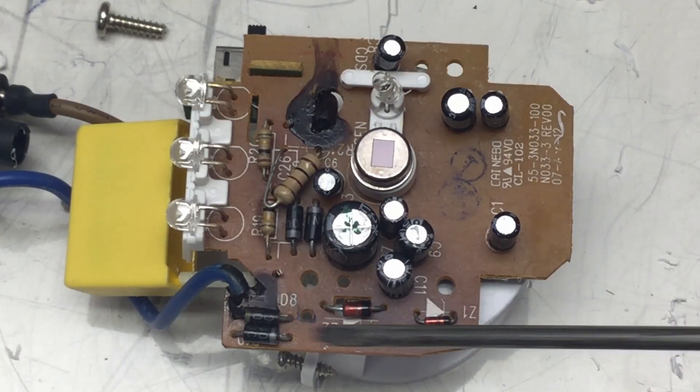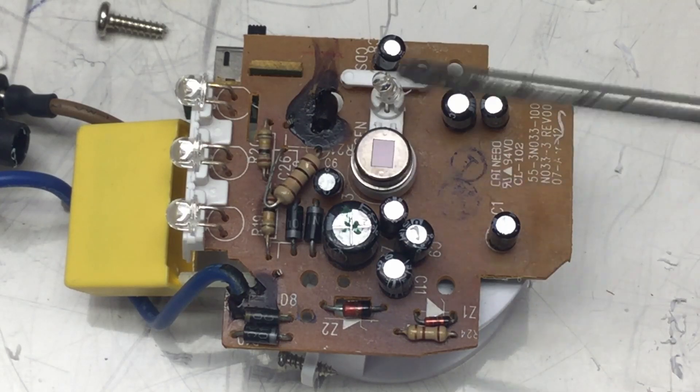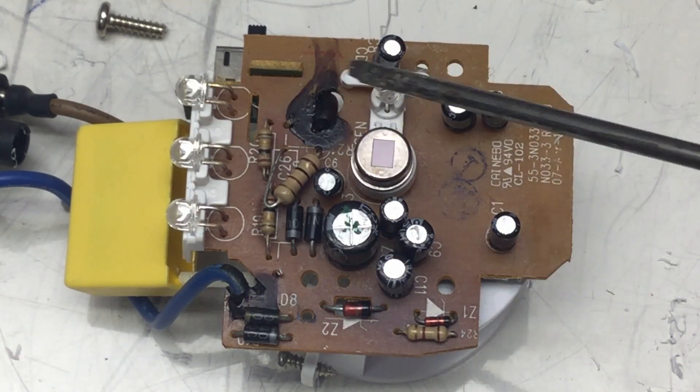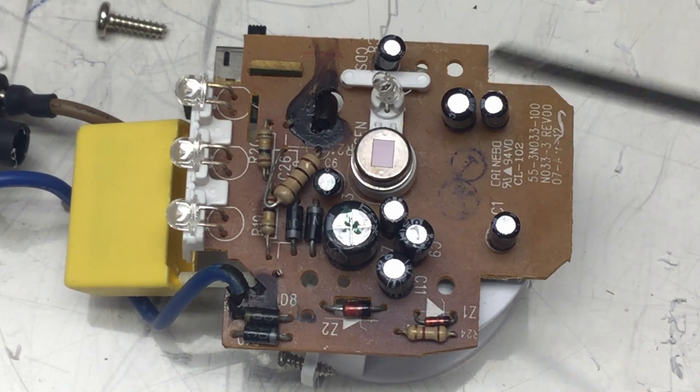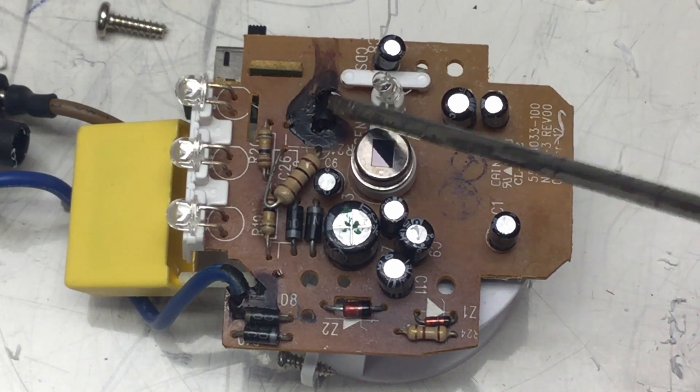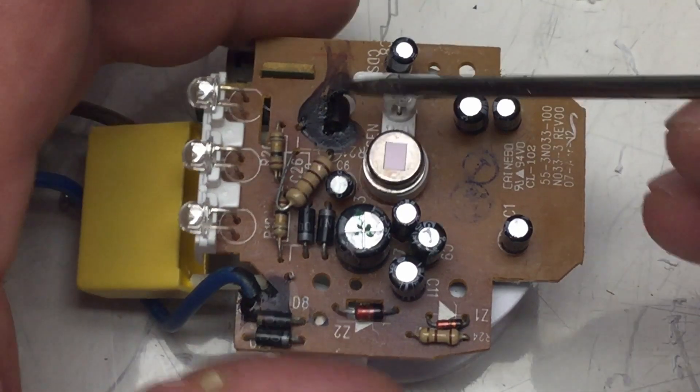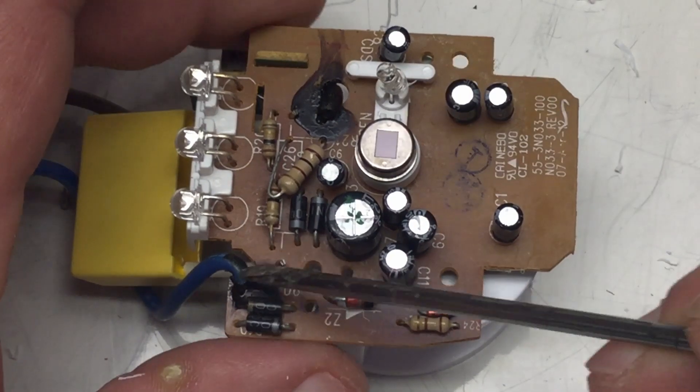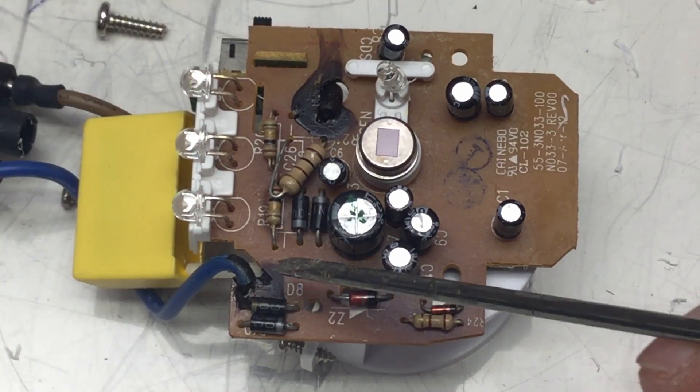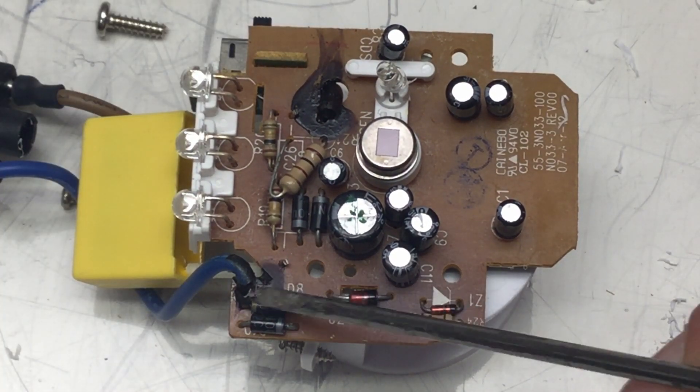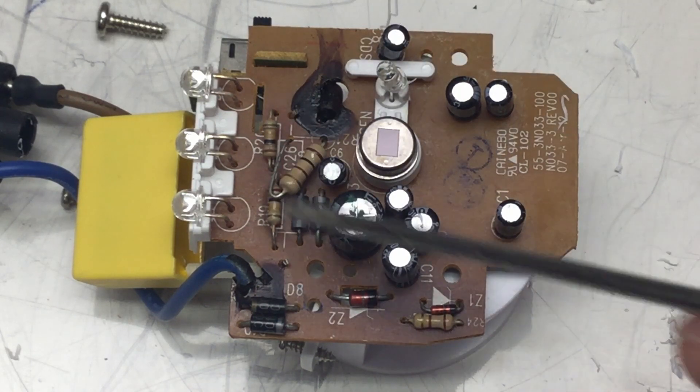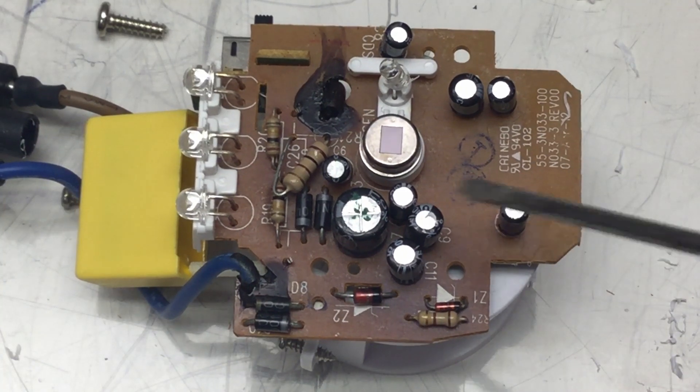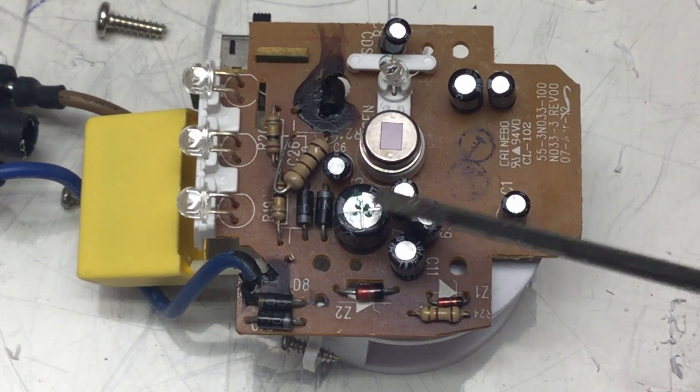Actually we can have a look at the board quite well without desoldering the AC mains connector here. First things you noticed are these blackened areas where the mains AC phase and neutral comes in. That doesn't look too good. Otherwise the parts here, including the electrolytic capacitors, they look okay.